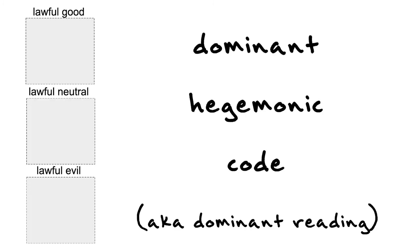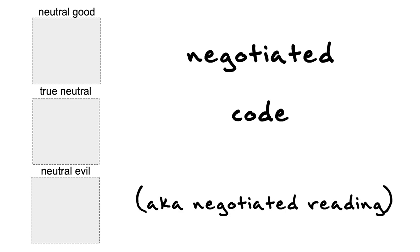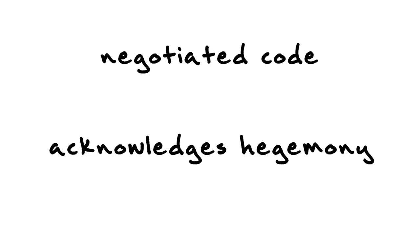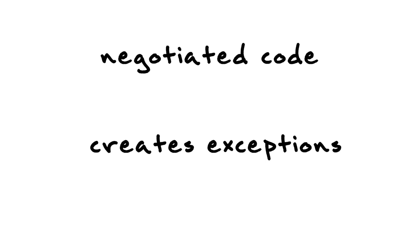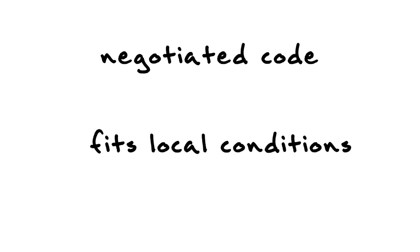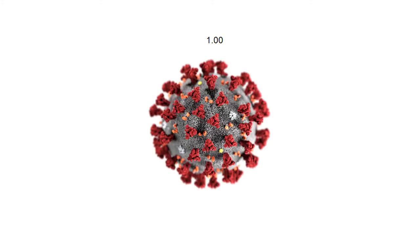The next position, which I call the neutral position, is negotiated code. It acknowledges the hegemony but creates its own ground rules and exceptions to better fit personal circumstances and local conditions. For example, in the university we have a hegemonic grading system where 1 is the highest grade and 5 is the lowest. But in light of COVID-19, we might want to adjust that — some professors do pass-fail, some do mass promotion. Those are exceptions to the rule made because of a special circumstance, in this case the pandemic.